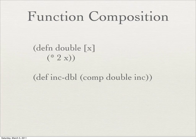Just an example: if you have a function called 'double' which takes x and doubles it — multiplies it times two — and there's a standard Clojure function called 'inc' which takes an integer and increments it by one, you can compose those together to get a function called 'incdouble'. If you give incdouble a two, you'll get back a six, because two plus one is three, and three doubled is six.